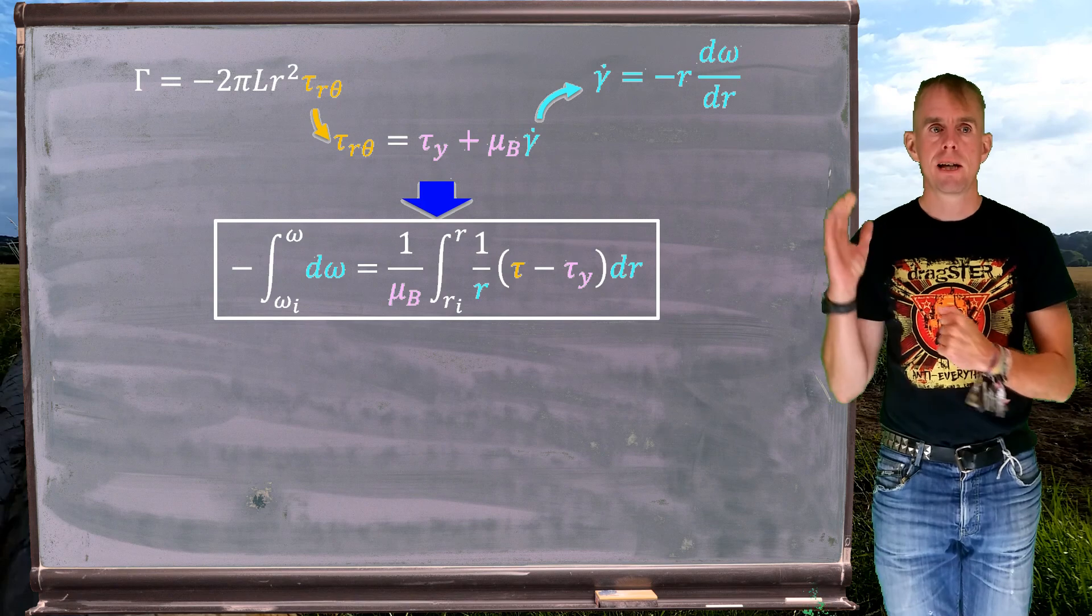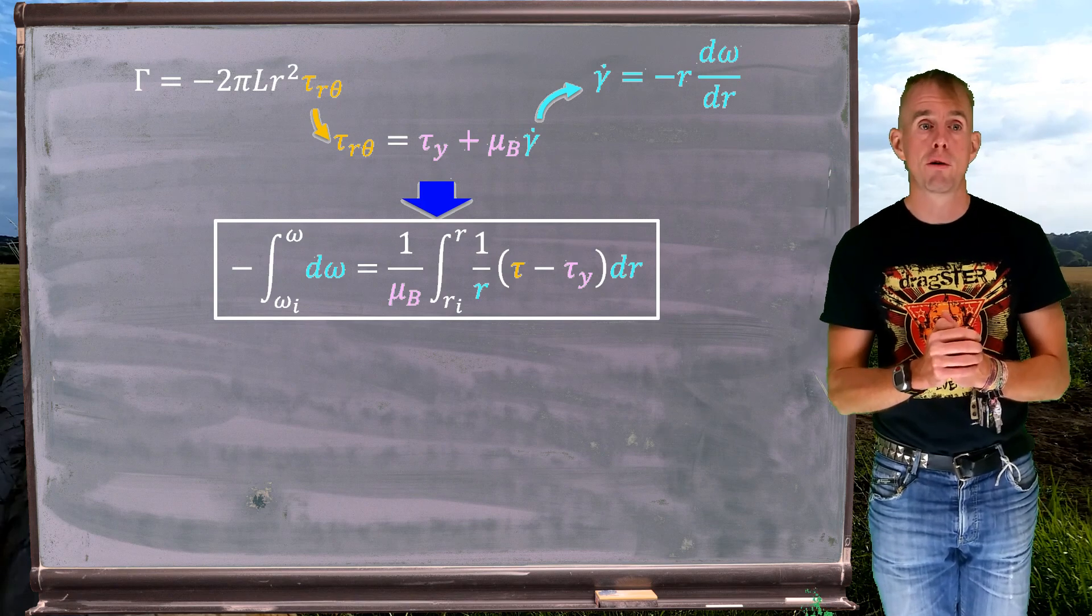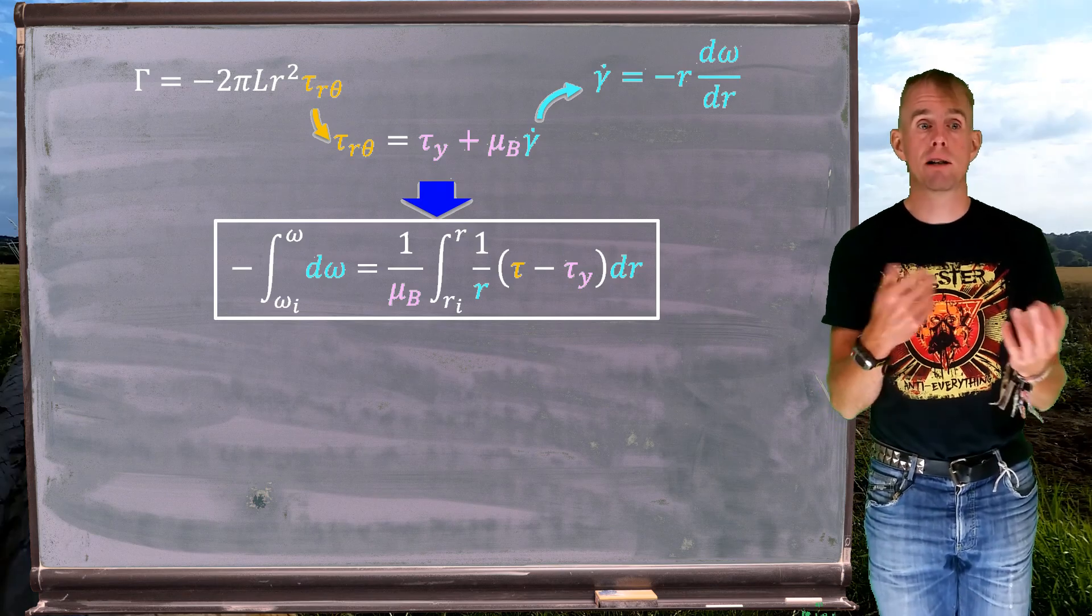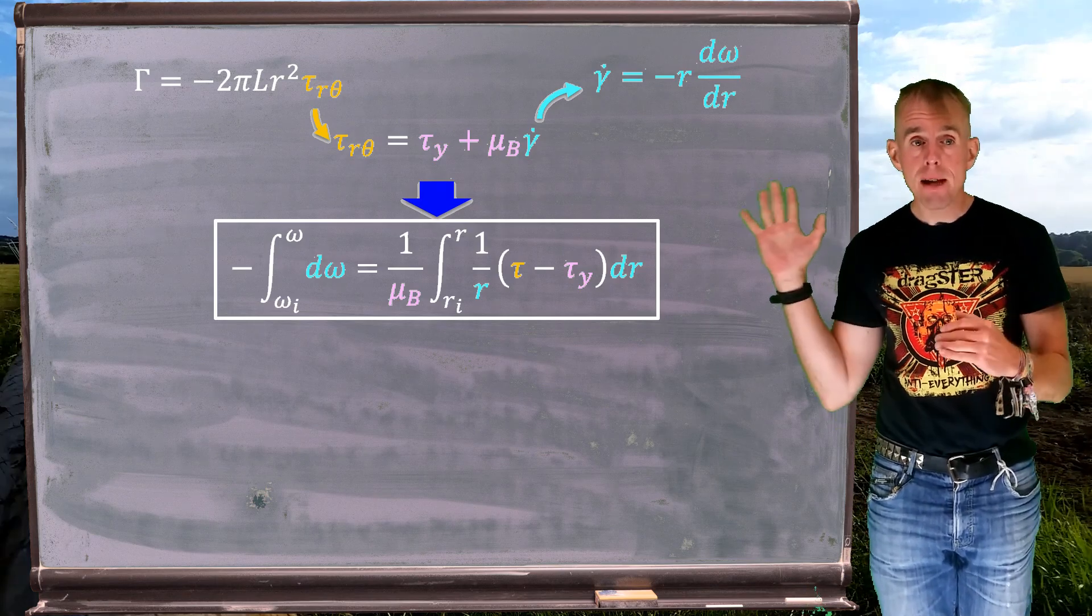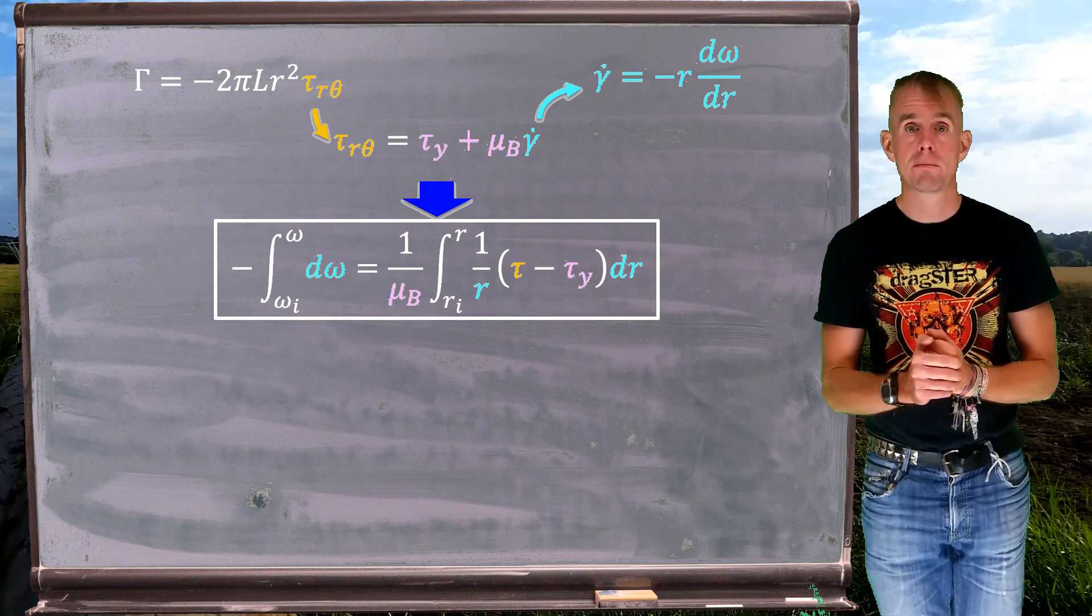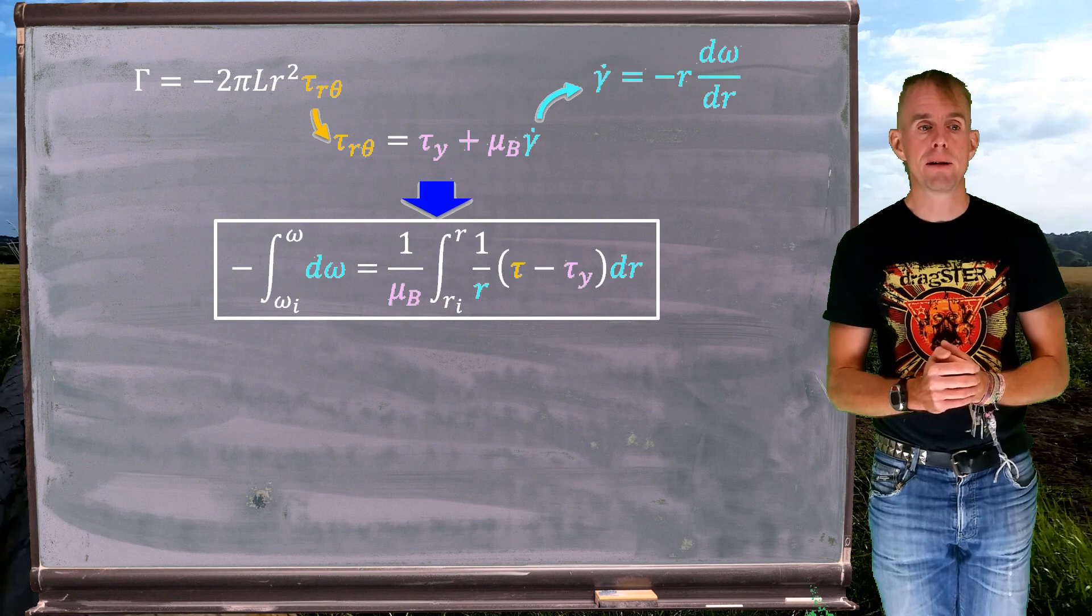And then we're going to write the integral that drops out of that. So there on the board now, on the right-hand side, is the rearranged version of the Bingham equation. If we rearrange it such that gamma dot is the subject, we end up with tau minus tau y over mu b. That's the terms on the right-hand side. And on the left-hand side, we simply have the integral of the angular velocity omega.